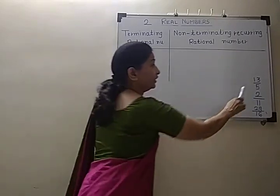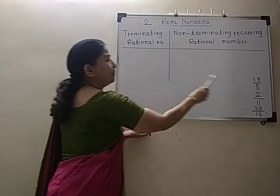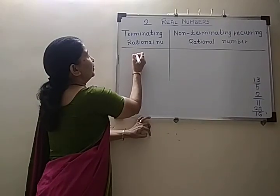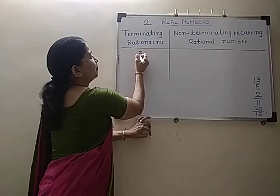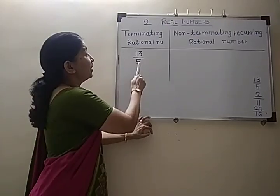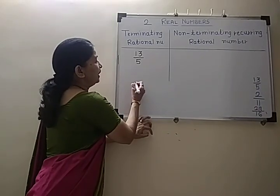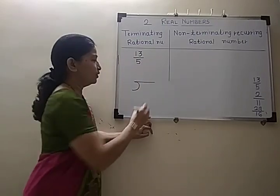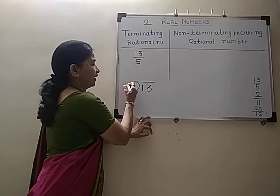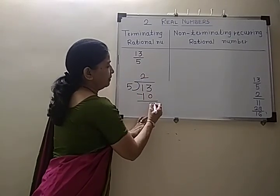Let us try for 13 upon 5. So, 13 is the numerator and 5 is the denominator. We will divide this numerator 13 by the denominator 5. 5 goes into 13 once, giving 10, and the remaining is 3.